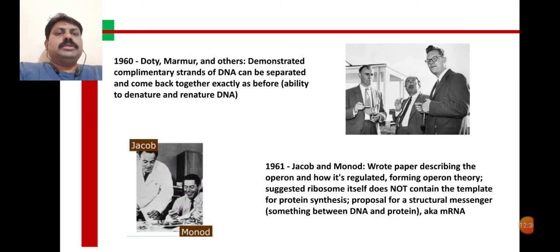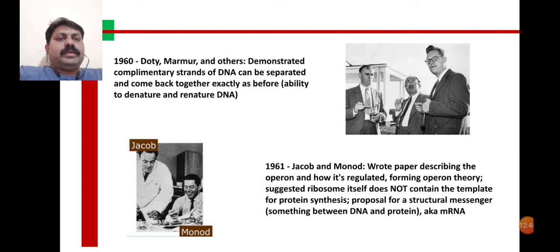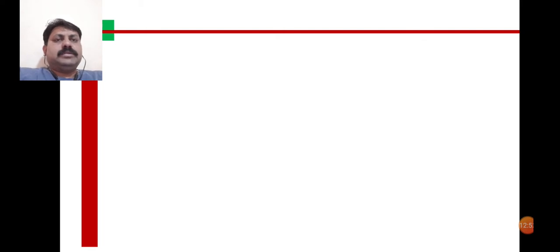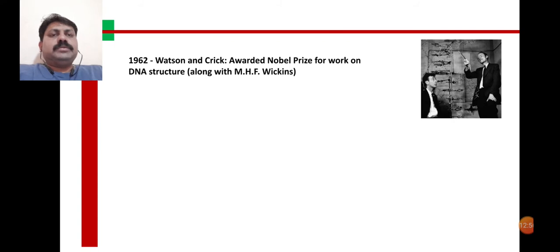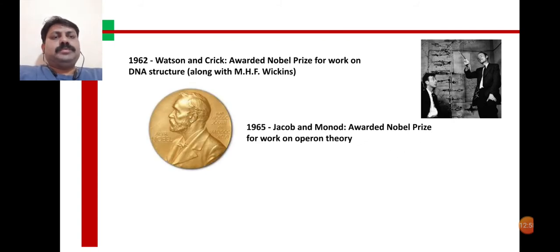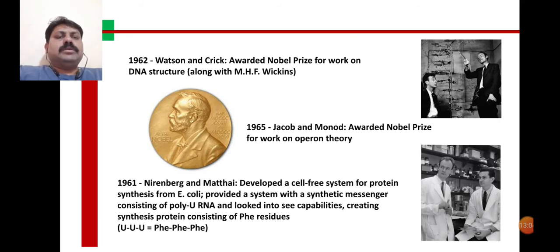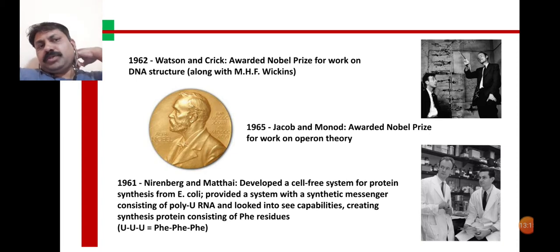In 1960, Doty, Marmur, and others demonstrated that complementary strands of DNA can be separated and come back together exactly as before — related again to DNA replication. Then Jacob and Monod wrote a paper on messenger RNA. Watson and Crick received the Nobel Prize along with Wilkins for the structure of DNA, and Jacob and Monod received the Nobel Prize for the operon concept.